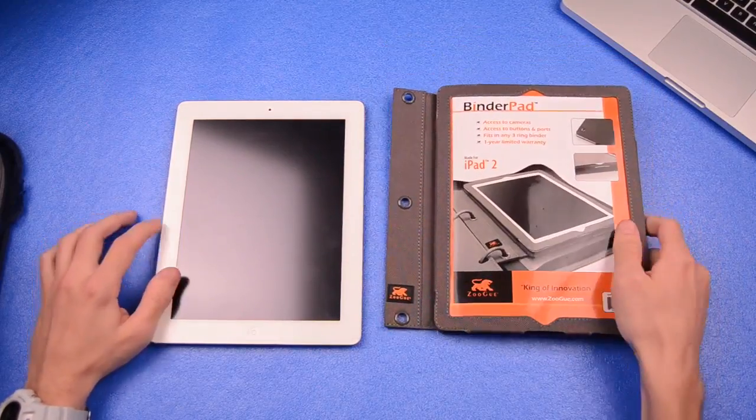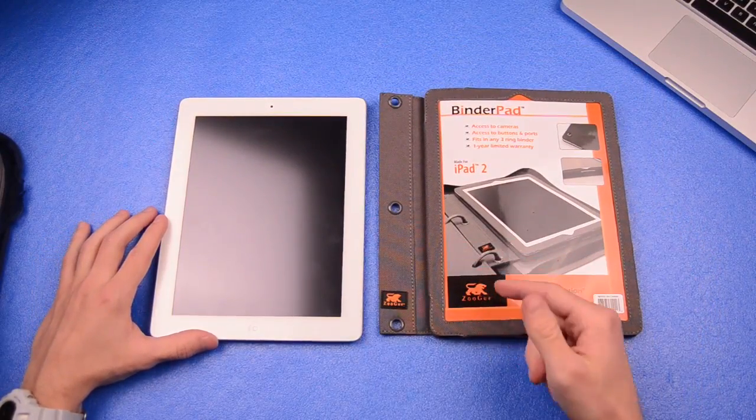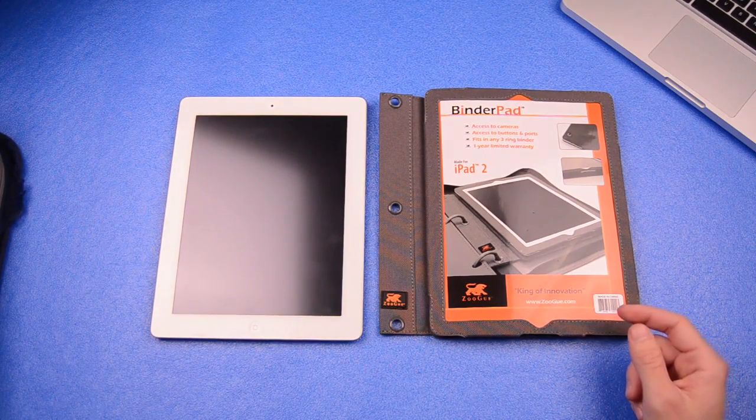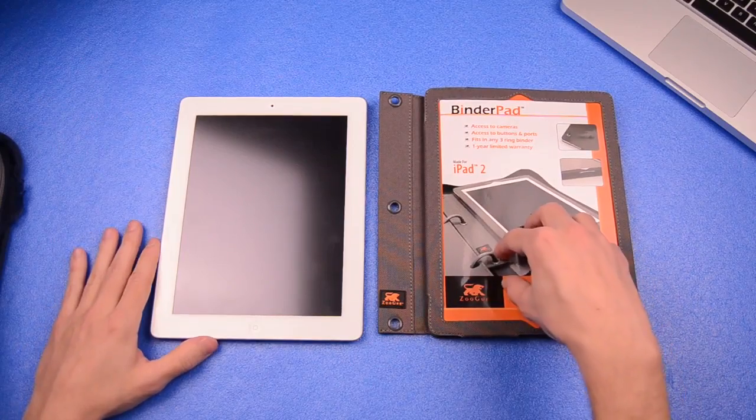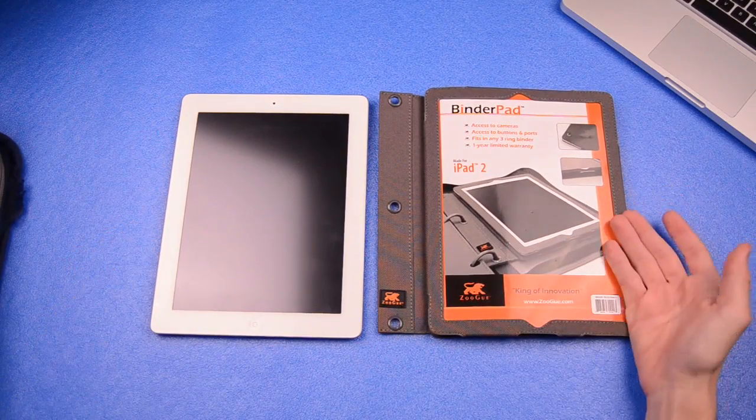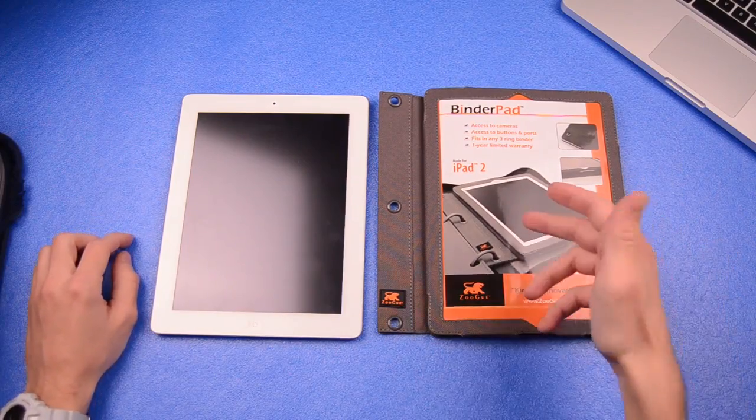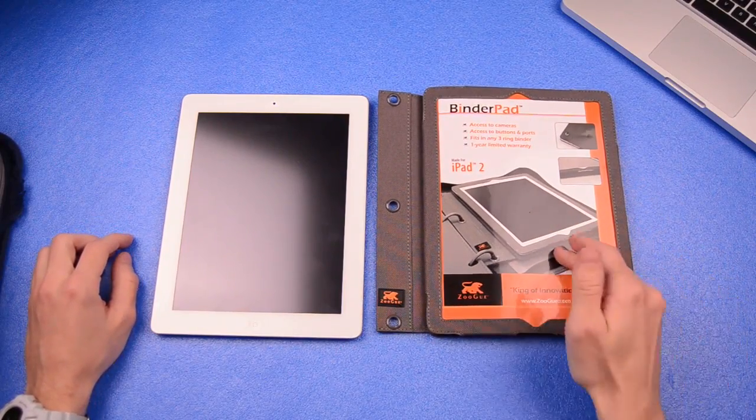And what this case is going to do is further that even more. With the binder pad from Zugu, it's going to allow you to take your iPad 2 and bring it to the classroom whether it be in your binder or in your Trapper Keeper or whatever you want to transport it in, a three ring binder. And as a student you can use it, as a teacher you can use it, you can prepare notes on this, you can prepare images, you can do research, you can play games, you can cheat on tests...